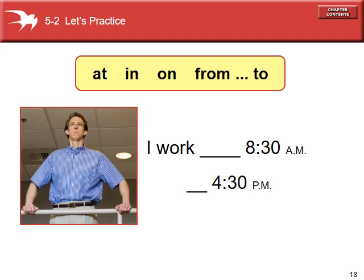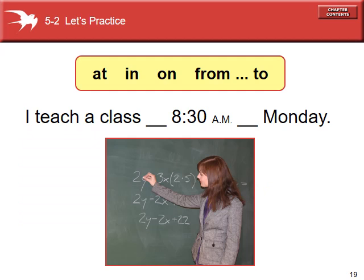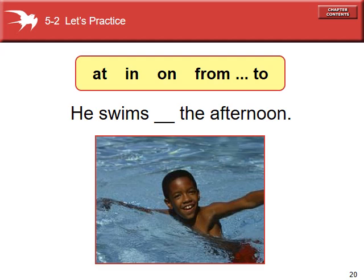Here we have two spaces with a time and another time, so this one is going to be "from" and "to". In this next one, we also have two spaces. The first is a clock time, but we have to check the second — and the second one is a day, not a clock time. So we can't use "from...to" since both need to be clock times. The first blank is "at" for a specific time, and the second is "on" for a specific day. And "afternoon" is made up of many hours, so that one is "in".